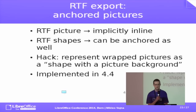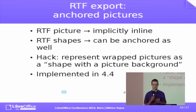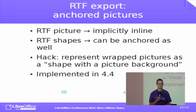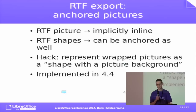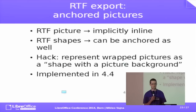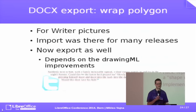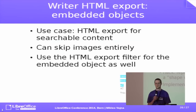Another long-requested feature was about the RTF filter: if you had anchored pictures — not anchored as a character but anchored to a paragraph, character, or page — during saving, all pictures became inline. The reason is that the RTF standard doesn't support this directly. From the RTF point of view, you can have a picture that's always inline, or you can have a shape with a background color that can be anchored properly, but not both at the same time. The hack implemented in Word is to describe such a picture as a shape with a bitmap background — this hack wasn't implemented in our RTF filter, but now it's fixed.